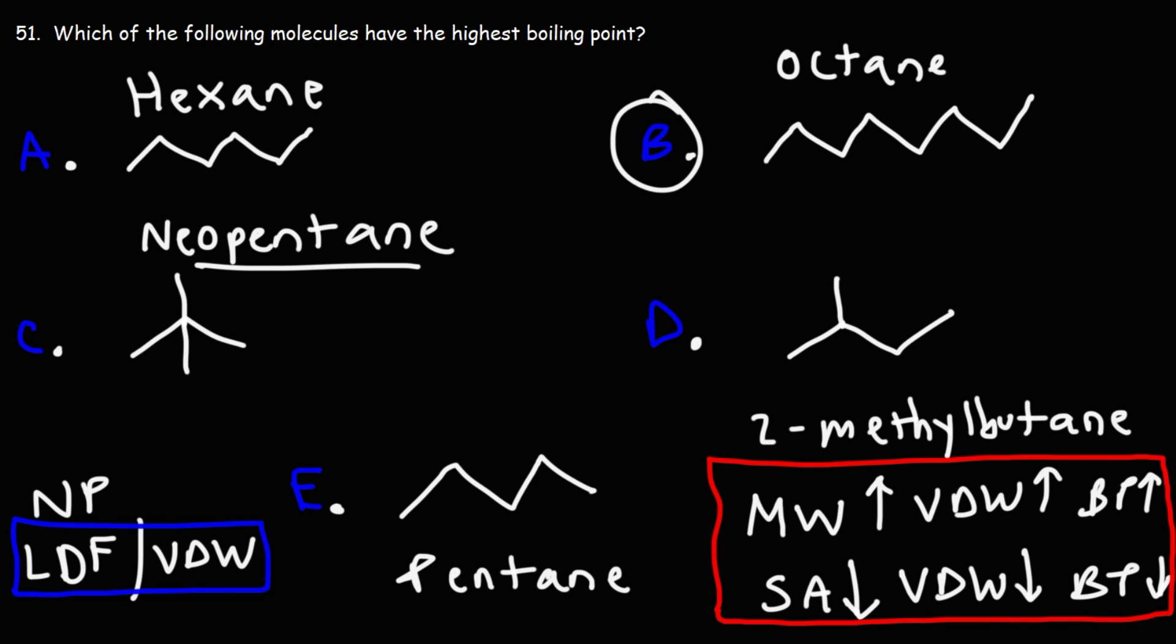Now, just to put some numbers in perspective here, the boiling point of octane is 126 degrees Celsius. So that's going to be the highest.